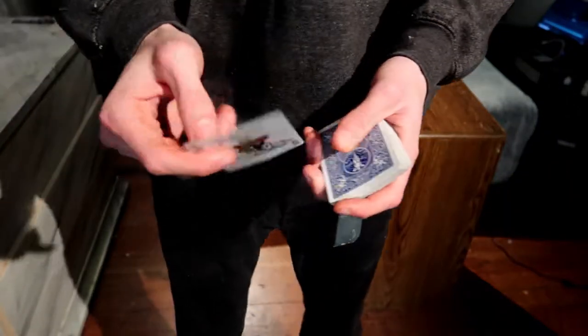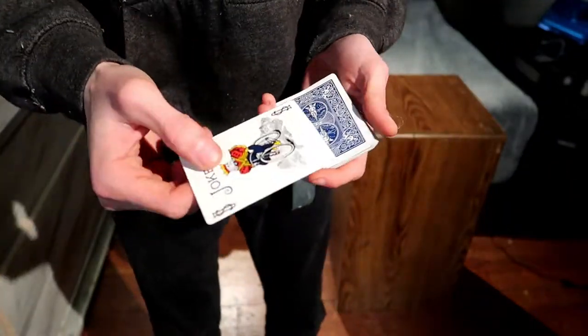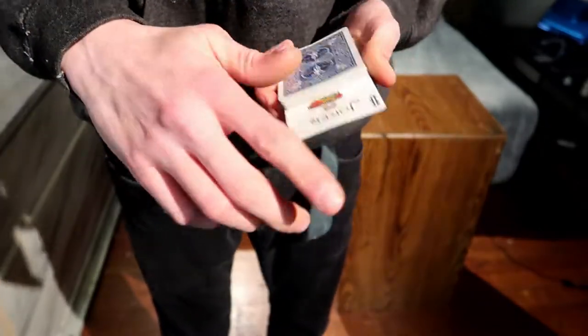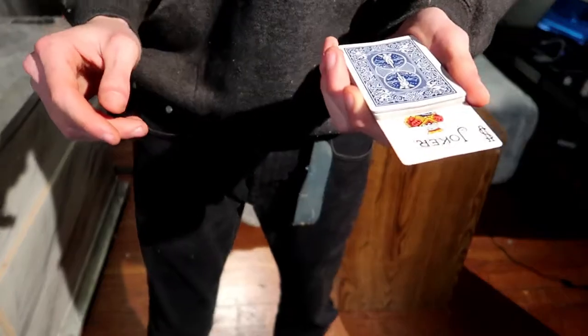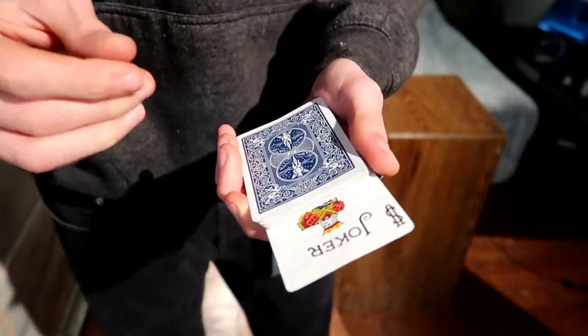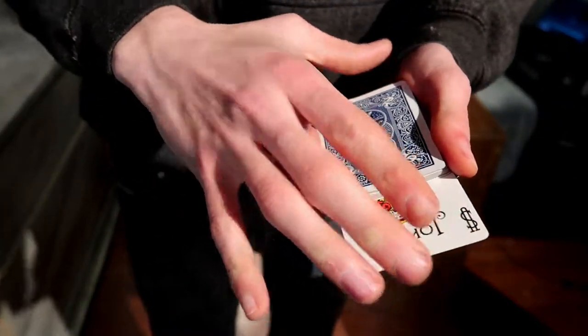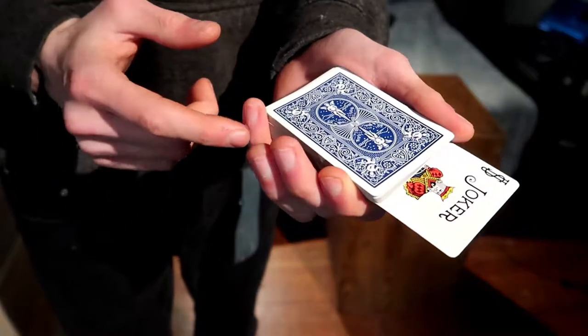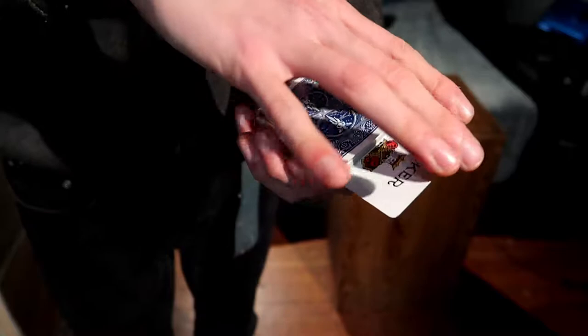So let's learn this. What you're going to do is you're going to take a card, place it into the middle. First step. And then from here, you're going to push it in diagonally, much like the diagonal palm shift. But this finger, your pinky is going to stay here. And it's going to catch that card.